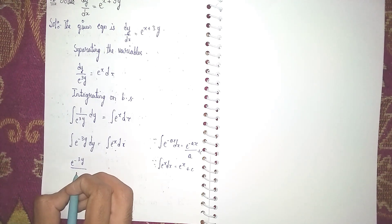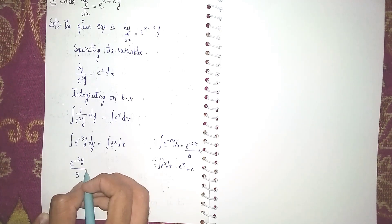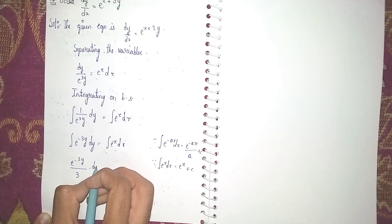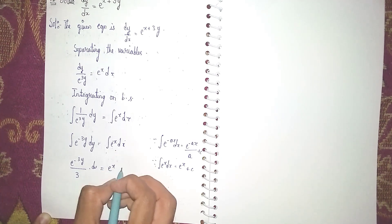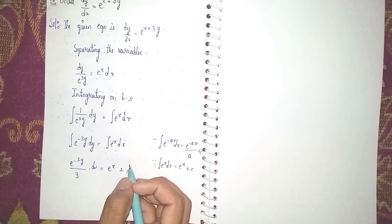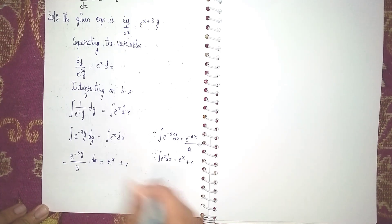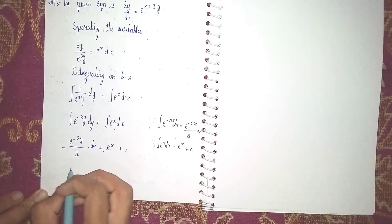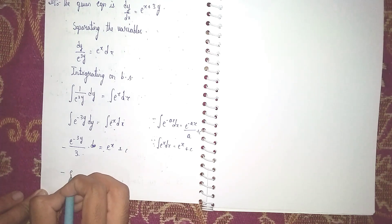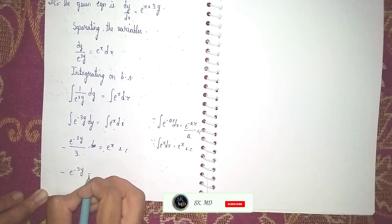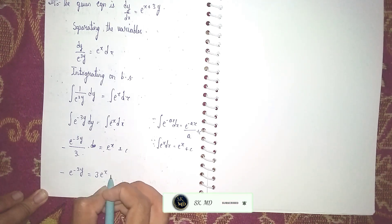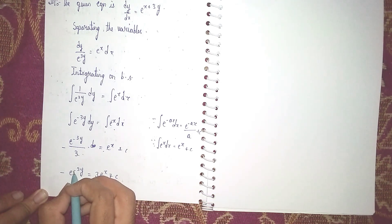Applying the formula: e^(-3y) / 3 = e^x + C. Here a minus sign comes out, so we take minus outside. Sending the 3 to the right side by multiplying: -e^(-3y) = 3(e^x + C).